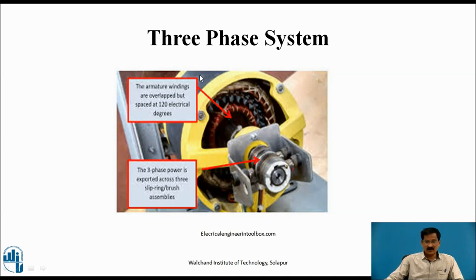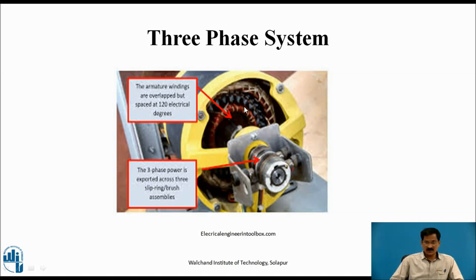Here you will find these three-phase windings overlapped with each other with a displacement of 120 degrees electrically. You will also find slip rings, which are responsible for collection of the three-phase induced EMFs. In short, the construction is similar to that of the single-phase system; the only difference in this three-phase system is it consists of three different windings.